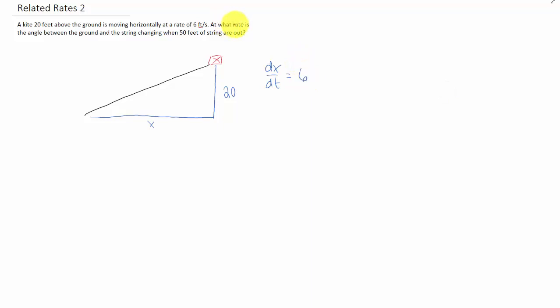Now we're asked to find at what rate is the angle between the ground and the string changing. So the angle between the ground and the string we need to name. We'll call it theta. And our goal is to find how fast that's changing. Or in other words, we need to find d theta/dt.